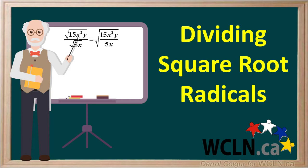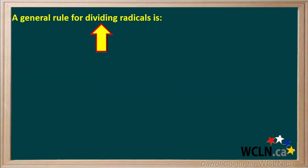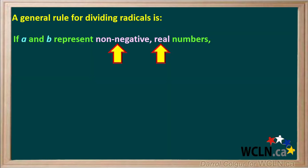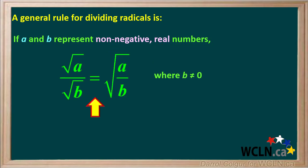Square root radicals can be divided. A general rule for dividing radicals is: if variables a and b represent non-negative real numbers, then the square root of a divided by the square root of b is equal to the square root of a over b. We have to specify that b cannot be equal to zero — we can't have zero in the denominator of any fraction. Any number divided by zero is undefined.